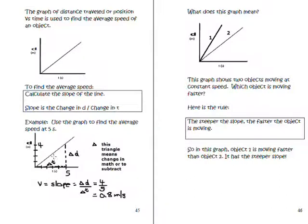So knowing that, here's a little practice problem. It says use the graph to find the average speed at five seconds. So here's our distance versus time. We've got a straight line there. Our slope would be change in y over change in x, just like in your math class, which in this case would be our distance divided by our change in time.